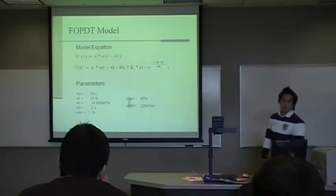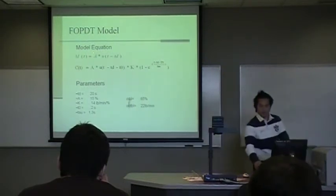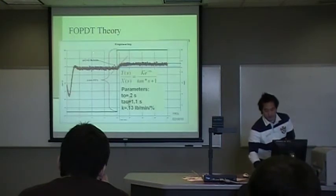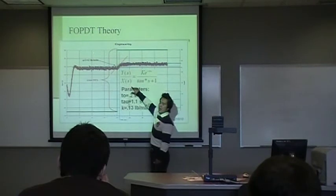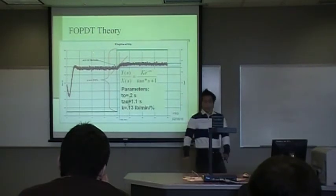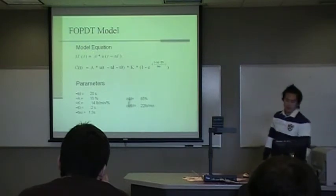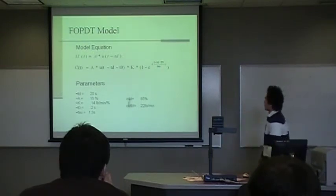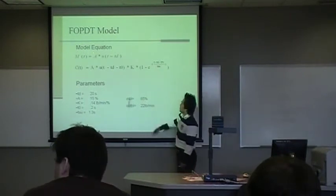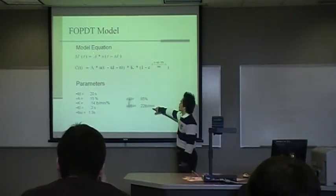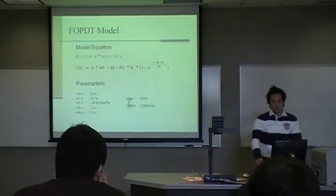And the FOPDT model - there is one thing. The domain here is in S domain, and FOPDT model domain is in time domain. And here are the parameters with improvements like 85% output 22 pounds per minute, as I'll show you in this graph.